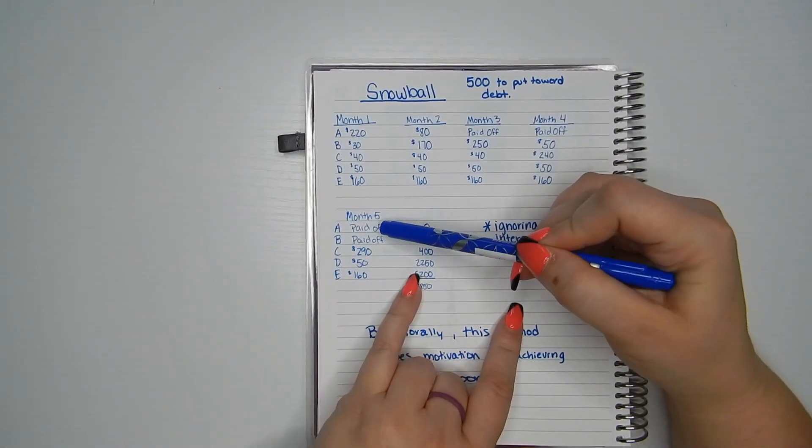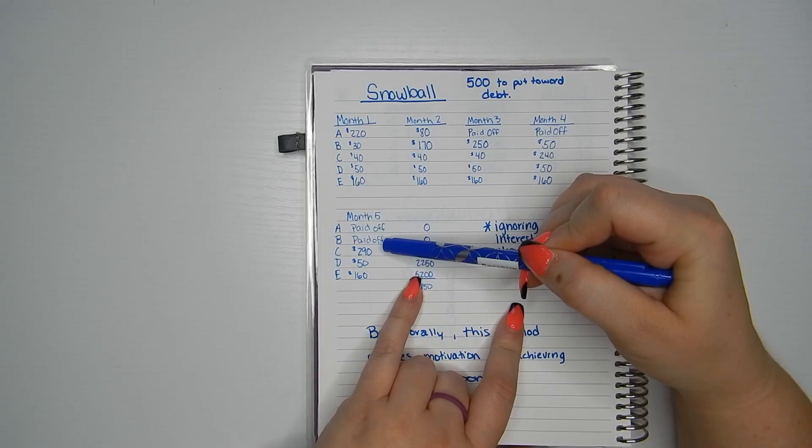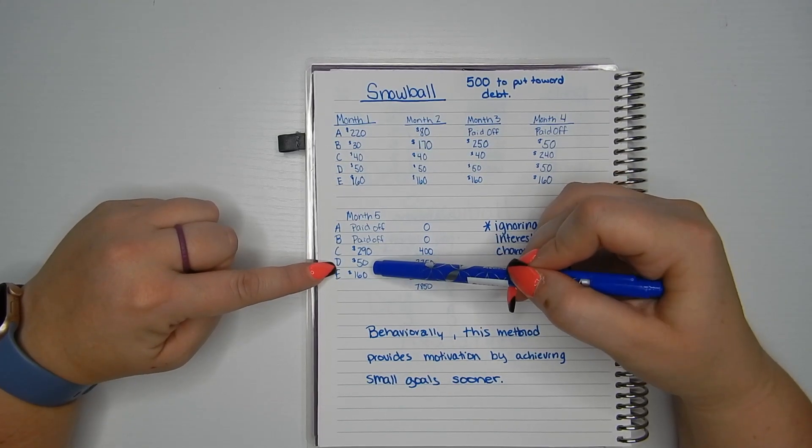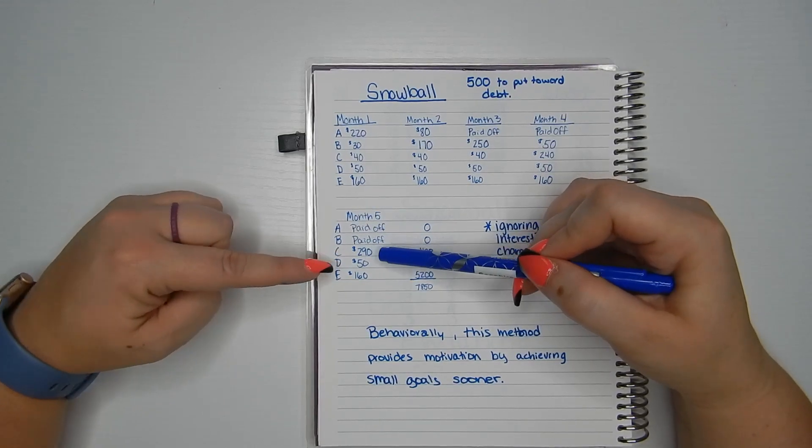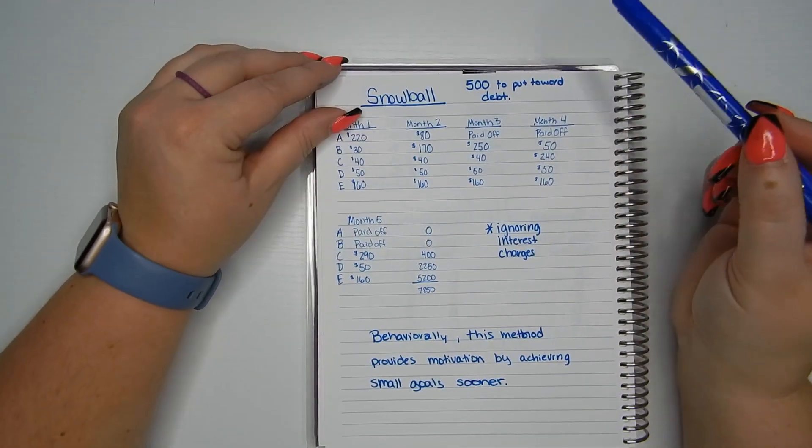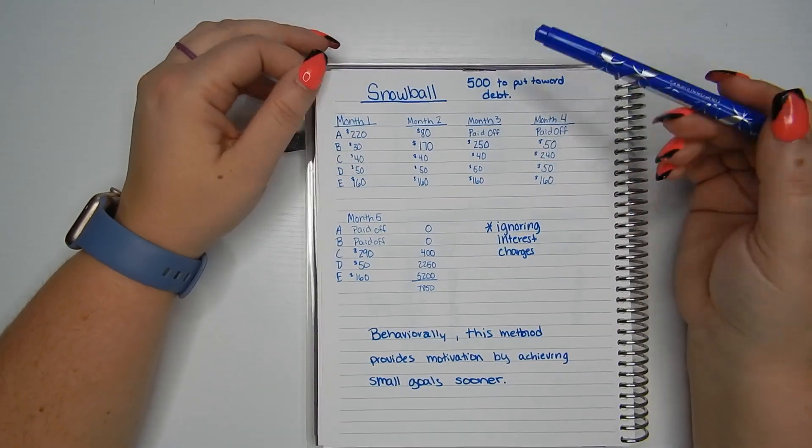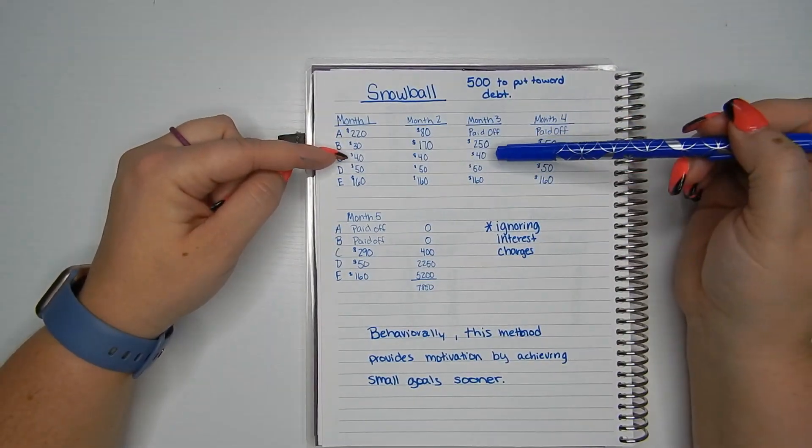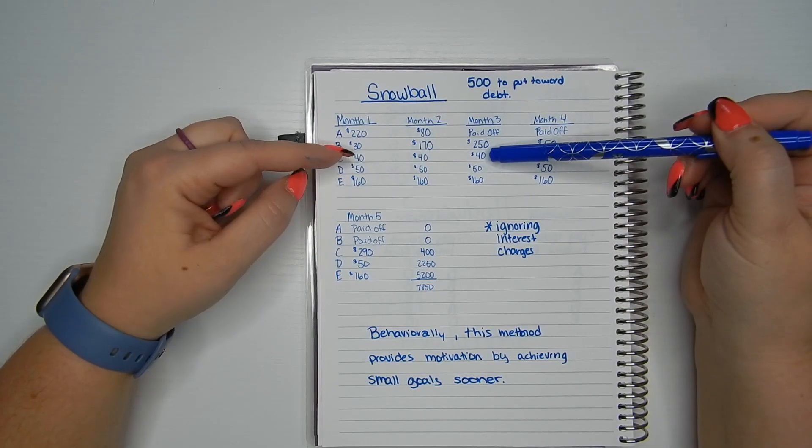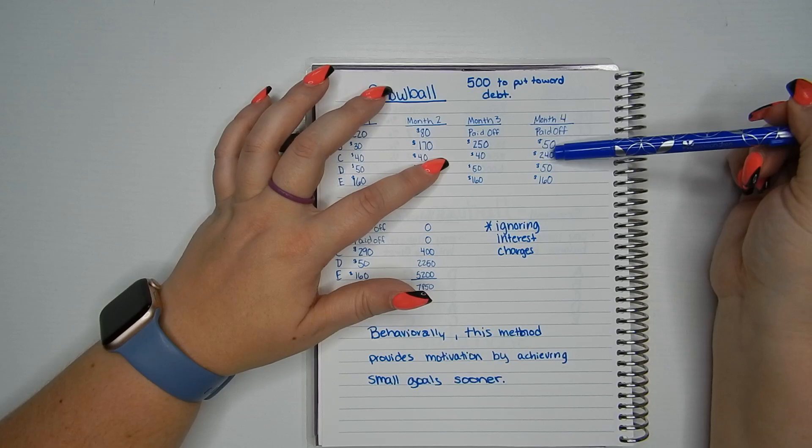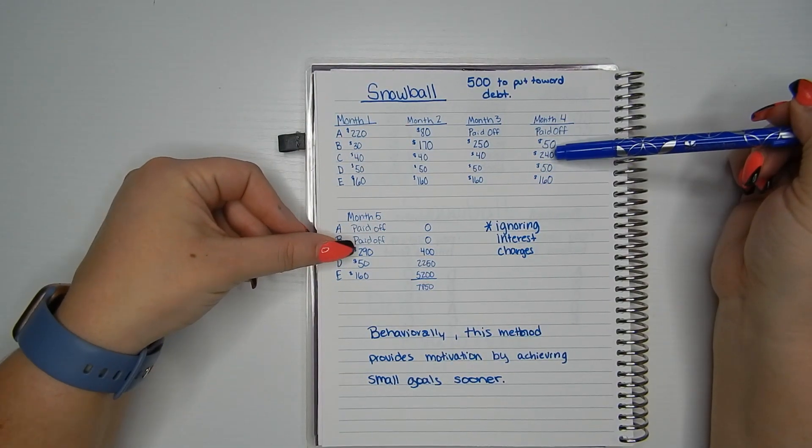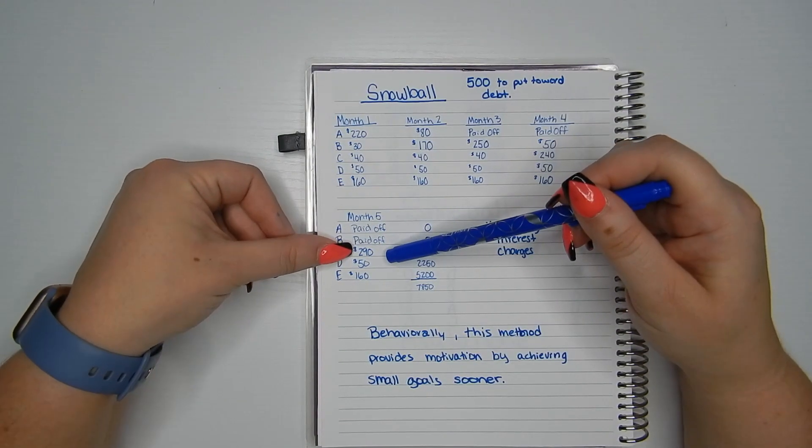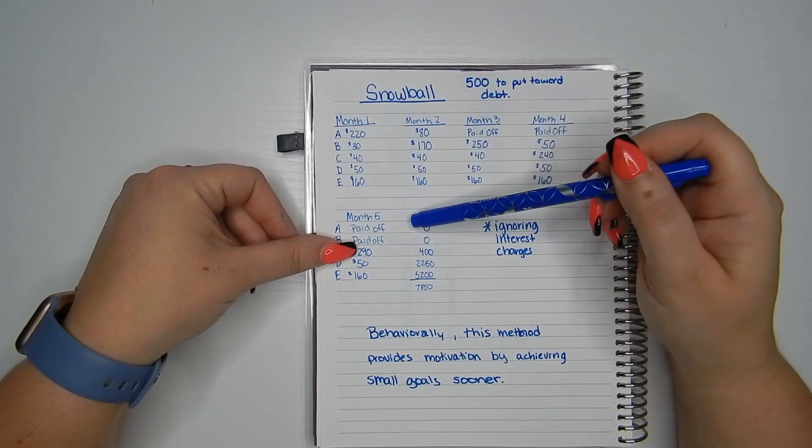Month five, look how awesome this is. Card A is paid off. Card B is paid off. My minimum for card E is $160. My minimum for card D is $50. Everything else gets to go to card C. So we can start knocking out card C. So at this point, we're making a pretty good dent on card C because it's only $1,000. So we've paid $650 towards card C already. So that one's almost paid off too by month five. We only have a couple more months left to pay on that one.